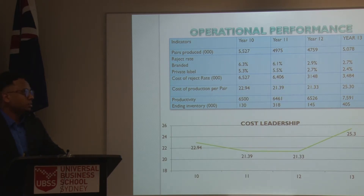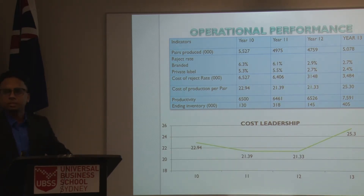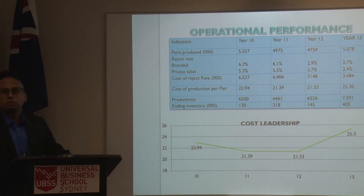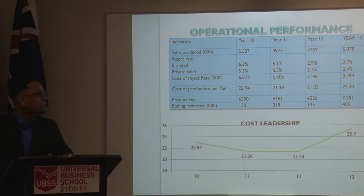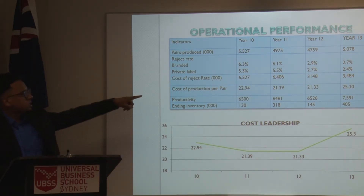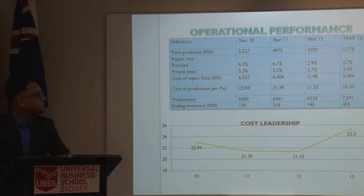Even in year 13, the rejection rate number was 2.7%. This same improvement happened with the private label as well. Looking at the cost of rejection rate, the same trend applies — the number was going down through to year 13.